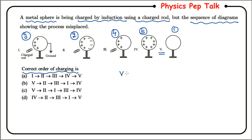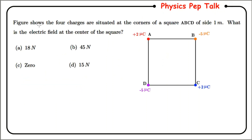So the order is: the first diagram represents the first step, the second diagram represents the second step, the third diagram represents the fourth step, and the fourth diagram represents the fifth step. You can observe that option C is the correct answer.